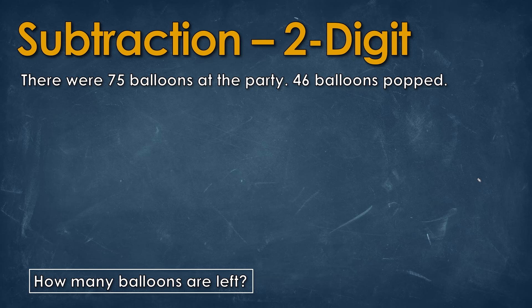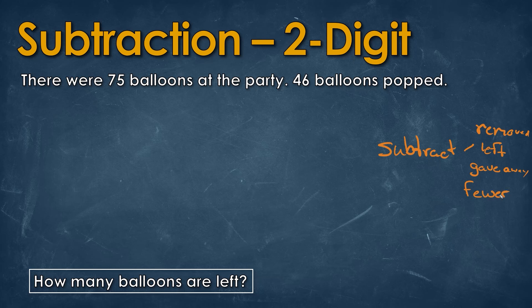Now let's try some subtraction. Whenever we see subtraction, we need to find words that tell us something has been removed — something is gone. We could think of 'leftover', or words like 'gave away' or 'fewer'. These words help us and tell us that something has been removed.